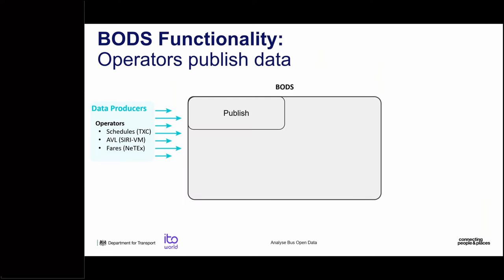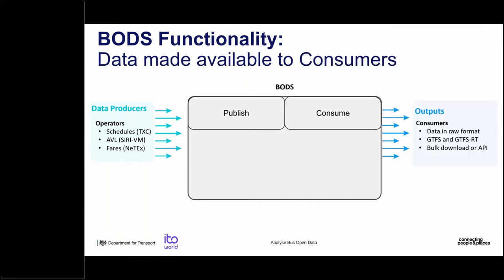Looking at BODS functionality: operators publish schedule data in TransXChange format, AVL vehicle location data in AVMS format, and fares in NeTEx — all going to the publish service. The consume service allows data consumers to receive uploaded data in raw format, and more recently GTFS and GTFS-RT feeds have been added. Data can be accessed via an API or downloaded in bulk for those building larger applications.